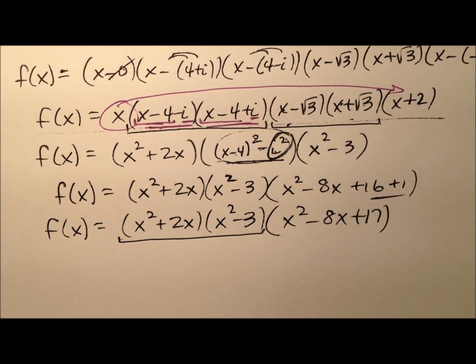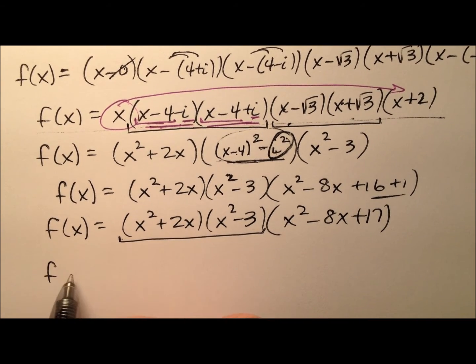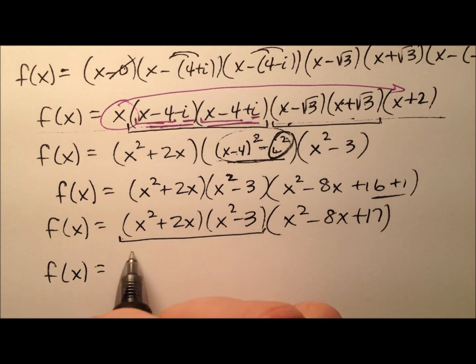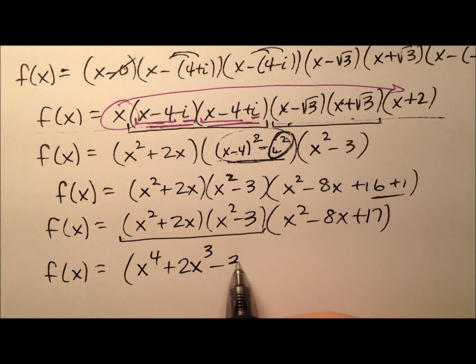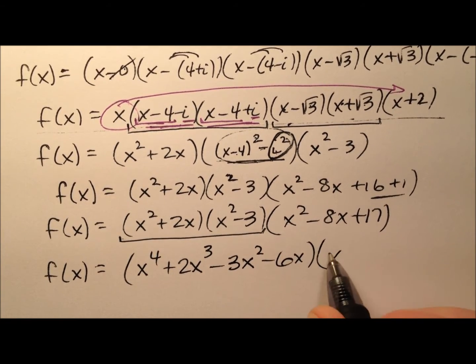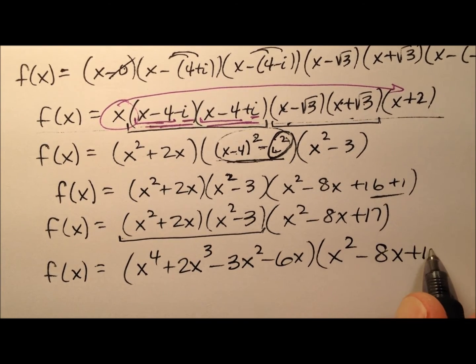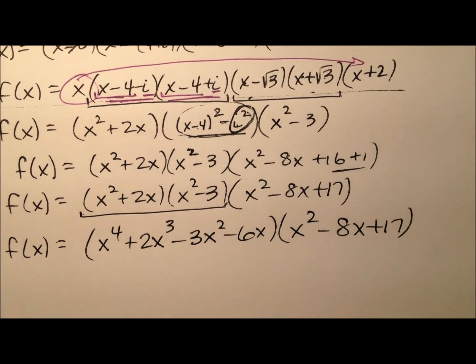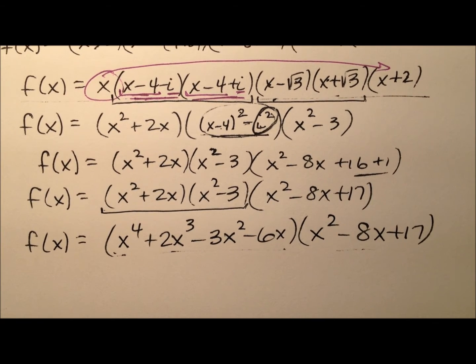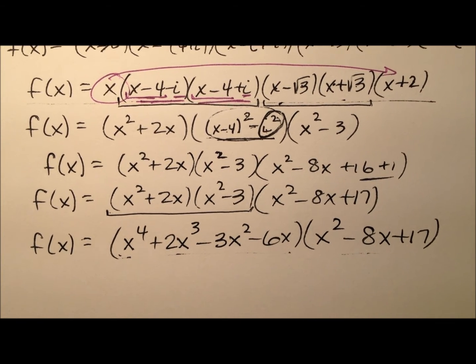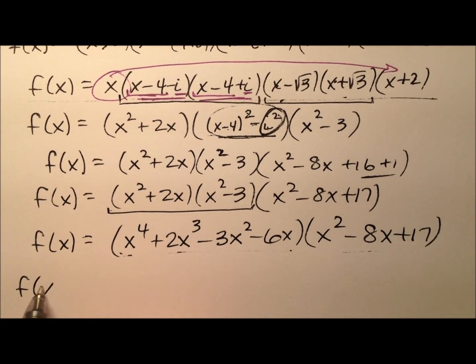So let's go ahead and multiply the first two together and then we'll multiply that product by the third one. So f of x equals, so it looks like we have x to the fourth and then plus 2x cubed minus 3x squared and then minus 6x and I'm going to multiply that through by this. So it's a polynomial with four terms times a polynomial with three terms. So we're going to have 12 terms and then combine any like terms that I can add together.